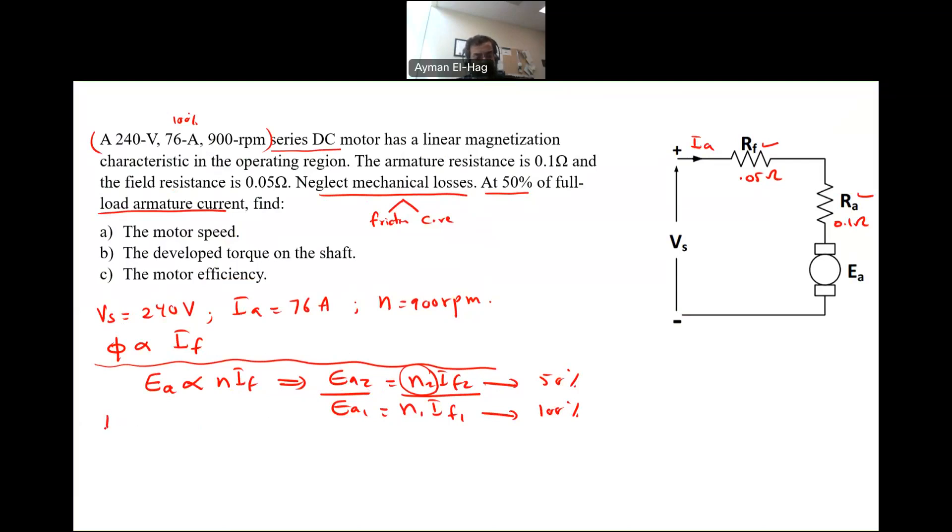If1 is equal to Ia. It's the same thing. The field current and the armature current are exactly the same. So it's Ia1, which is 76 amps. If2 is equal to Ia1 divided by 2, which is equal to 38 amps. Now I know this, and I know this.